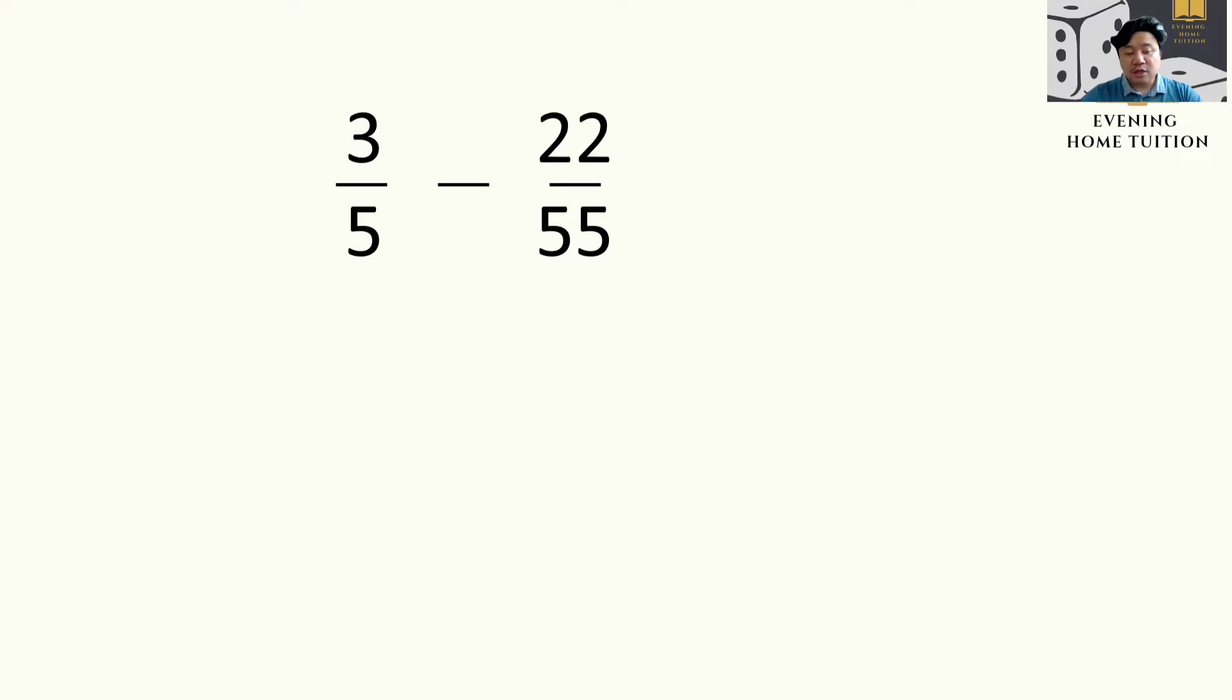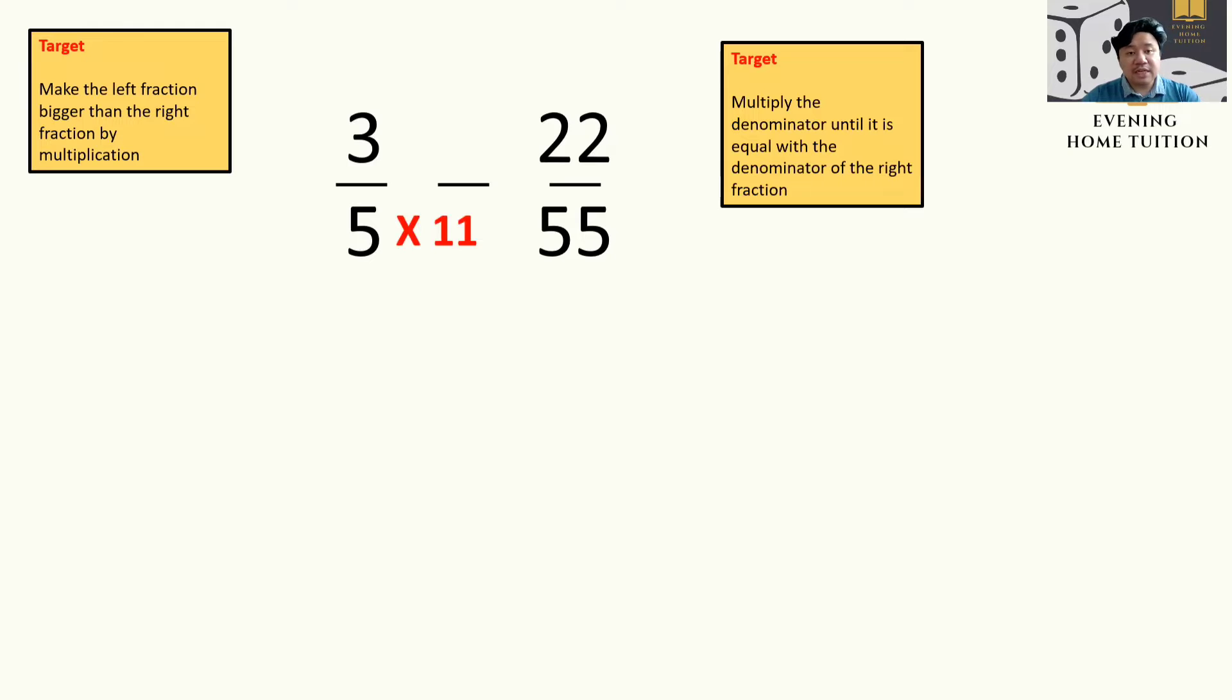make sure that the denominators for both fractions are equivalent. So here, to make the first fraction equal to 55, the denominator equal to 55, you need to multiply it by 11. So 5 times 11 is equal to 55, and here 3 times 11 will make it 33.